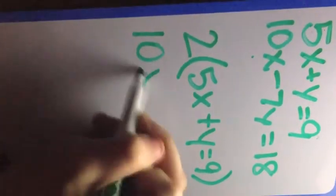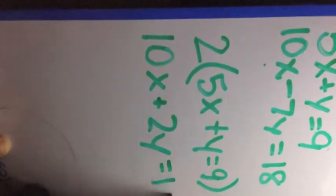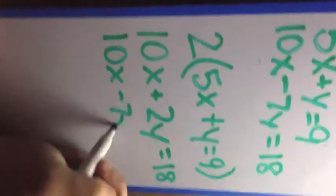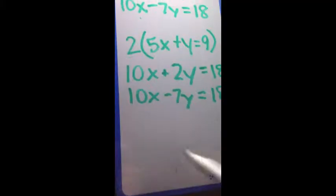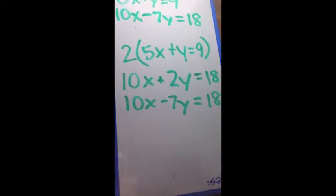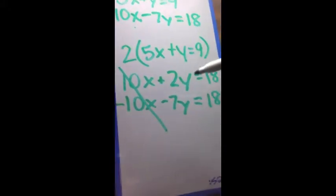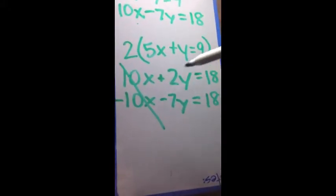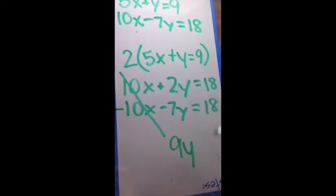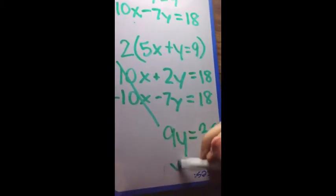We're able to do this by writing it out again. 2 times 5x is 10x, 2 times y is 2y, 2 times 9 is 18, sorry. And then we can plug in the bottom. 10x minus 7y equals 18. The 10x's, we finally got them to reach the same number and the same sign. They're now able to be canceled out. Same sign means subtract. We cross these out. Now what we need to do is we need to do 2 minus 7y. We are now going to get 9. This now results in 9y equals 18 plus 18 is 36. Y equals 4.